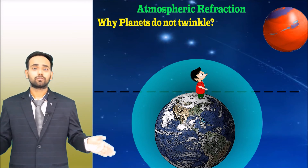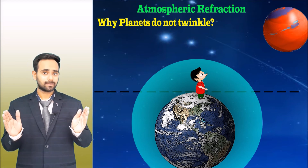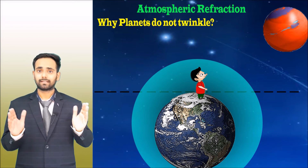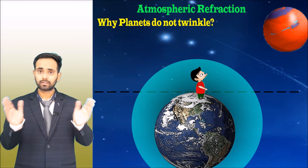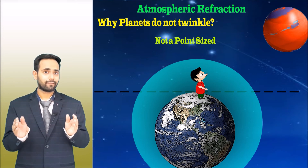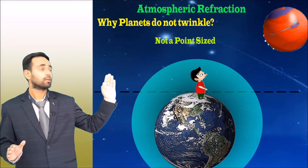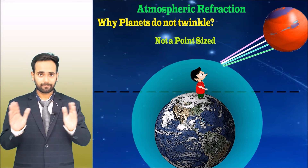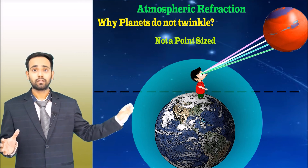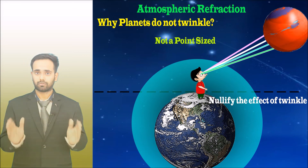Why do planets not twinkle? Stars are considered point sources because they are too far away, but planets are not too far from us, so we cannot consider a planet as a point source. To account for the twinkling effect of a planet, we must consider many points on its surface. Each point shows a twinkling effect individually, but the whole bundle of light from all those points reaches the observer's eye together, and the effects cancel out, nullifying the twinkling. That is why planets do not twinkle.